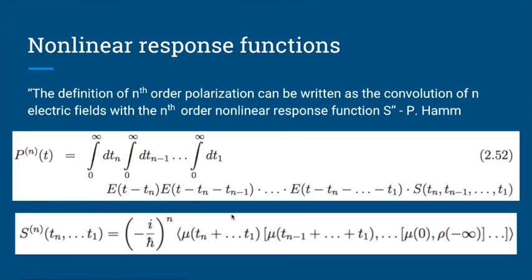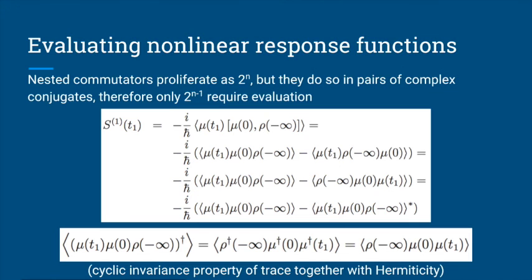The nth order nonlinear response function S^(n) is defined by isolating everything that is not the electric field factors — all the commutators and trace operations with the dipole and density matrix. So: P^(n)(t) = (i/ℏ)^n ∫∫...∫ E(τ₁)E(τ₂)...E(τₙ) S^(n)(τ₁,...,τₙ) dτ₁...dτₙ. We've finally arrived at what we've been after: a nonlinear response function formalism. This works for first, third, fifth order — any order.